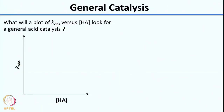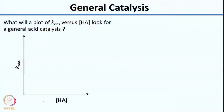Now let us see if you can plot this. What would a plot of K_observed versus concentration of HA look like for general acid catalysis? Think about the equation from the previous slide. For specific acid catalysis it was a straight line parallel to the x-axis. For general acid catalysis, since K_observed has a direct dependence on concentration of HA, as the concentration of HA increases you get an increasing straight line.